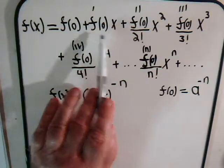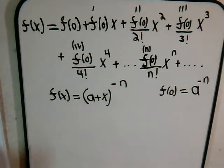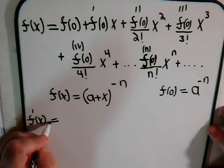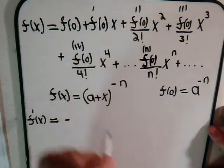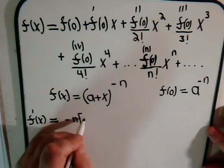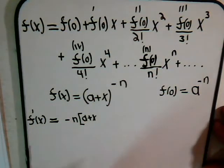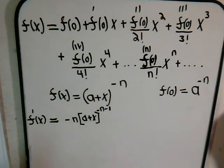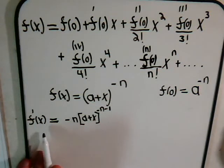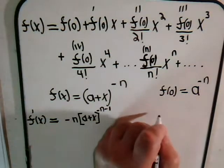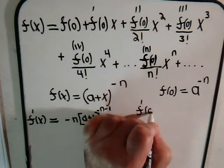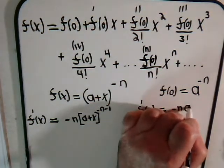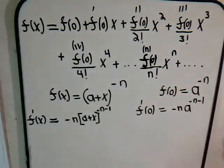Now, to find out what these other coefficients are, we have to take derivatives of our function. The first derivative will equal, bringing this down, minus n times (a plus x) to the minus n minus 1 power. And now, here if x equals 0, then x will equal 0 here, so we have that the first derivative evaluated at 0 gives us minus n times a to the minus n minus 1 power.